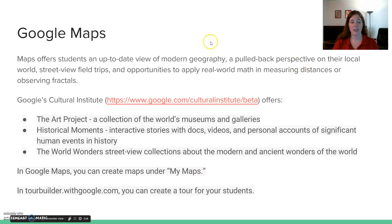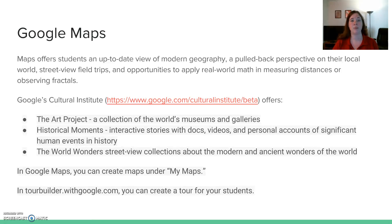They also mention Google's Cultural Institute, which I'd never been to before. It has three different aspects: the Art Project, Historical Moments, and World Wonders — covering Art, History, and World Wonders respectively. Each one allows you to explore a variety of documents, videos, and pictures to get a real understanding of a subject.